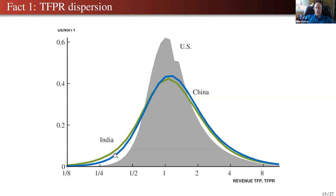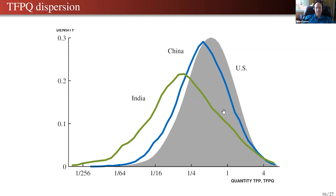A non-trivial part of China's growth may have precisely come from narrowing this gap. The gap between China's distribution and the US distribution narrows over time as they shrink the size of their public sector and state-owned enterprises.